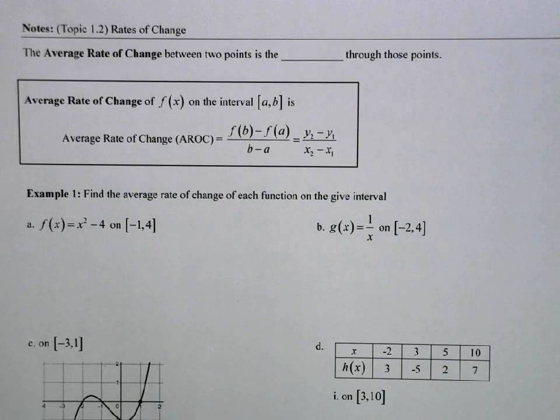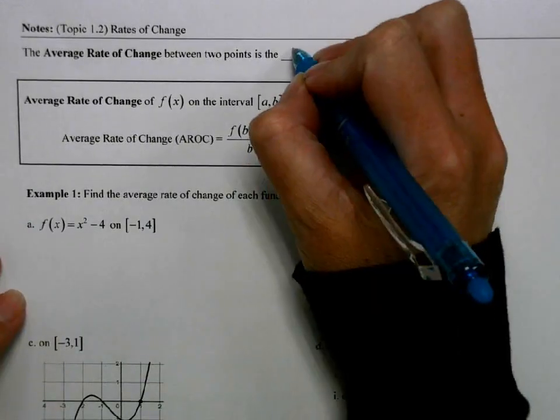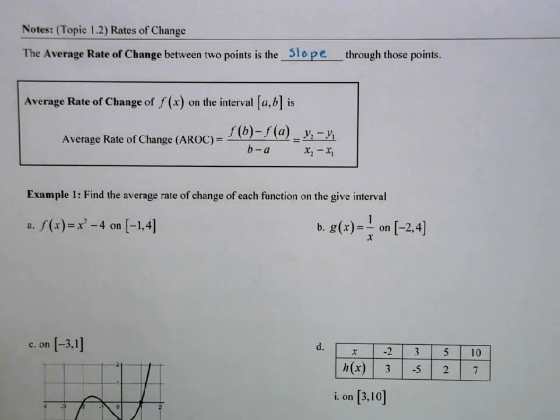In this video, I'm going to cover AP Precalculus Topic 1.2 about rates of change. This is an extremely important topic as it pops up over and over again in this course. We're going to see how it may appear on the AP exam during the free response, but it's really rather simple. The average rate of change between two points is the slope through those two points, and you've been dealing with slope for a very long time.